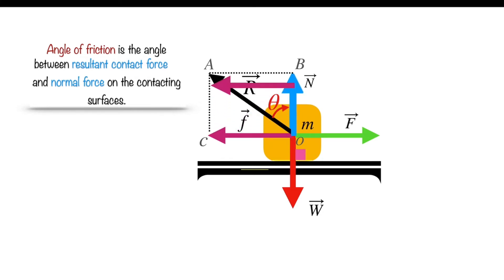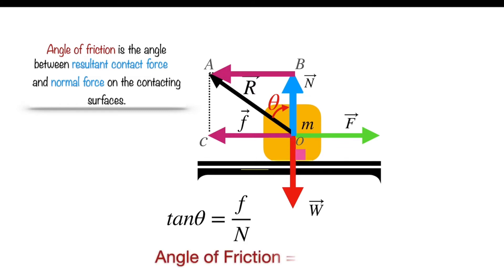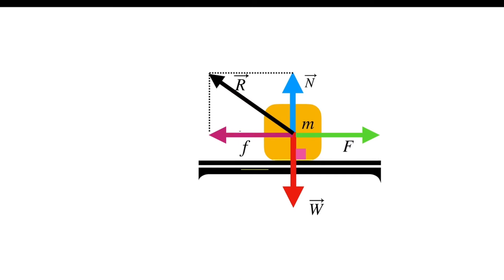The angle of friction theta is the angle between resultant force R and the normal N. From triangle OAB, tan θ equals AB divided by OB, where AB is the frictional force F and OB is the normal force N. So the angle of friction theta is given by tan inverse of F over N. Until the block starts moving, the frictional force is static frictional force.